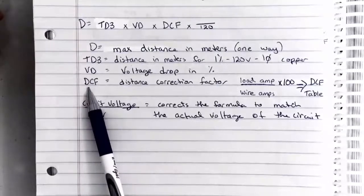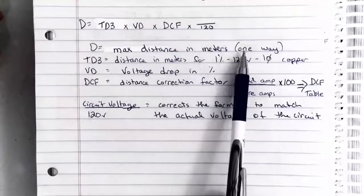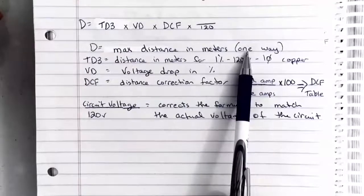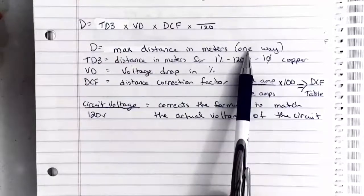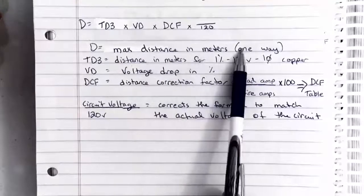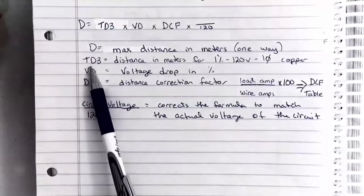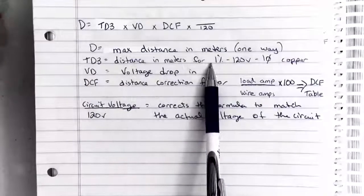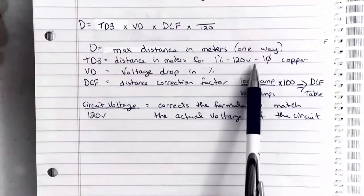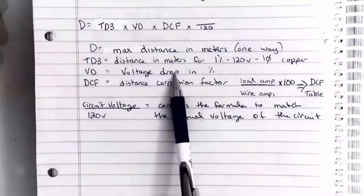Now the distance correction factor - there's a few things to look at here. The distance, maximum distance in meters, is a one-way distance. So we know that we have two wires typically going out to a load in single phase, and what we end up with is a hot going out and a return coming back. Our distance, total distance, is a one-way distance out to the point of utilization if it's a current circuit. The table D3 distance in meters, as I mentioned, that table was originally designed for 1%, 120 volts, single phase in copper.